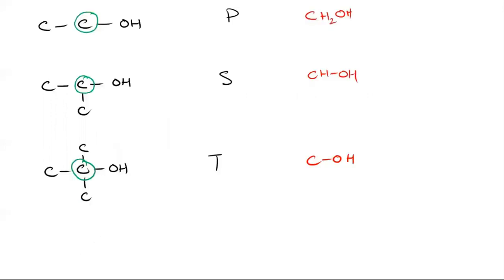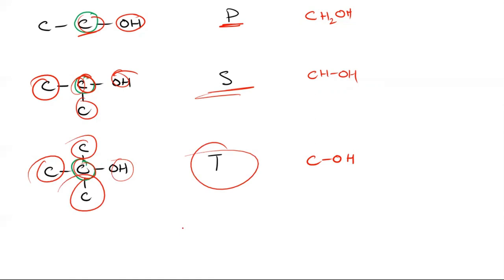You can see an example that if this OH is attached with one carbon, then it is primary alcohol. But with this OH, this carbon has two carbons attached, so it's secondary. And with this OH, this carbon has three carbons attached, hence it is tertiary.